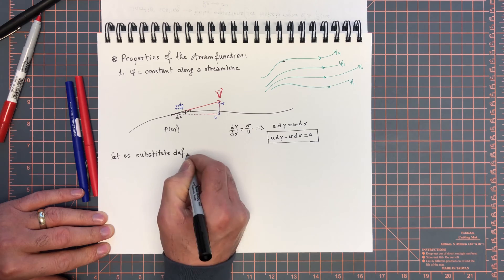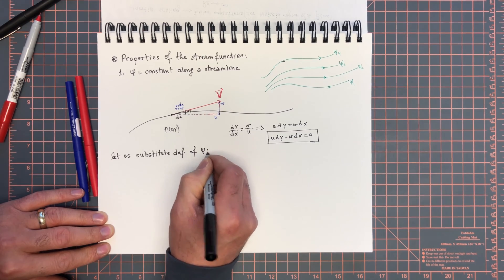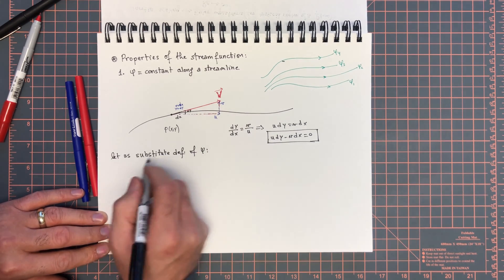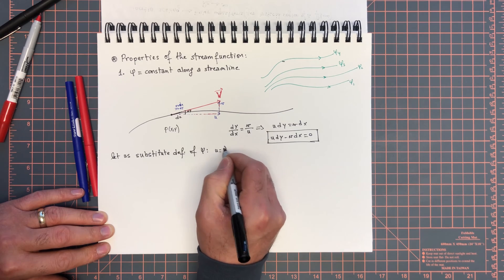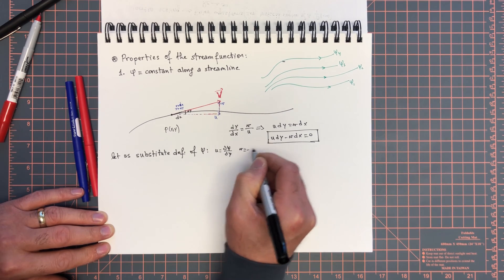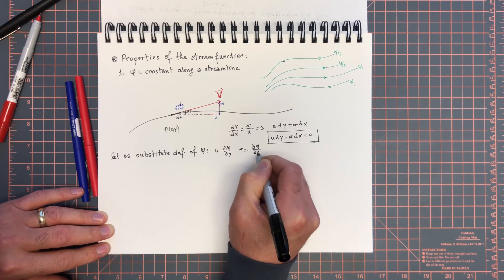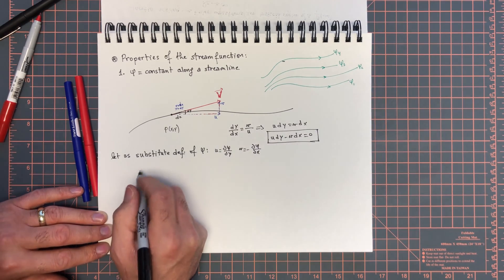Let us substitute the definition of ψ. Then we have for u, remember u was equal to dψ/dy, and v was equal to minus dψ/dx. So what do we get from this equation?